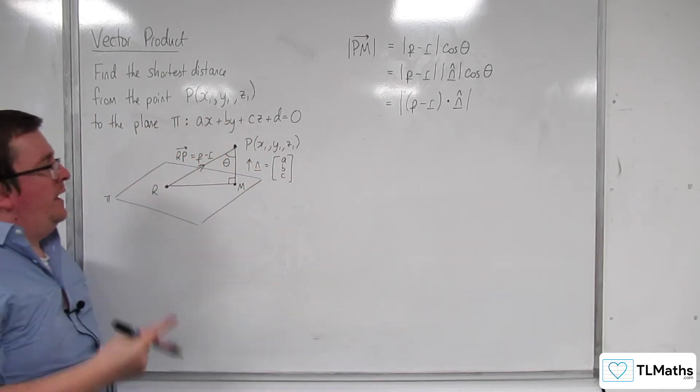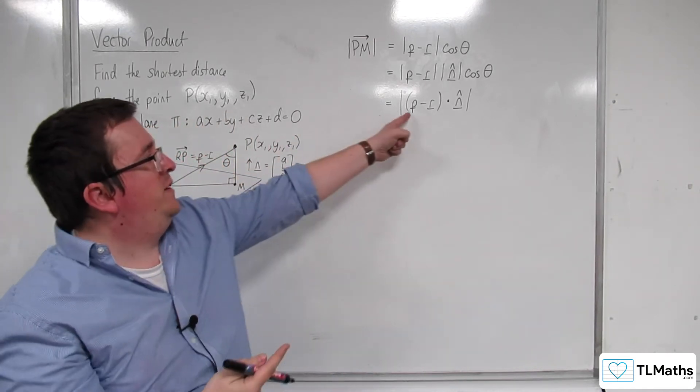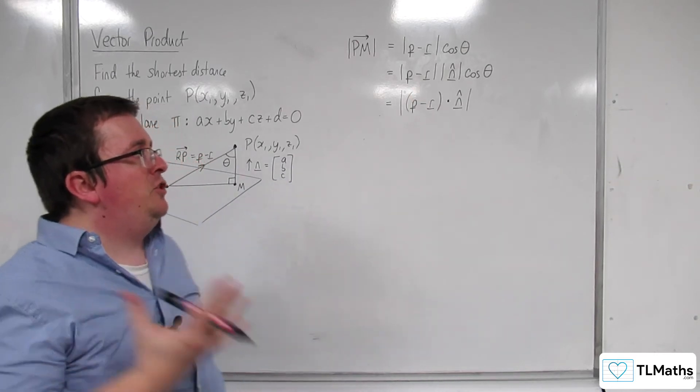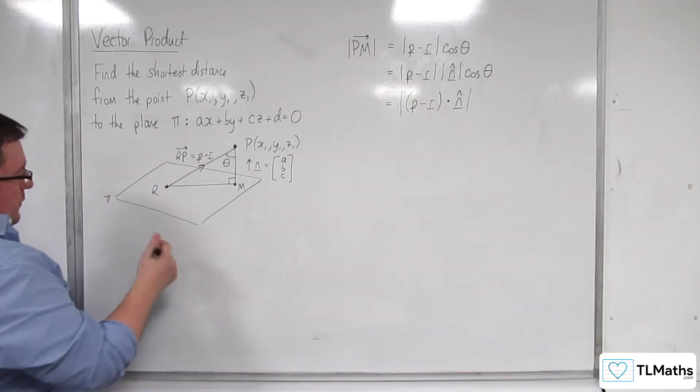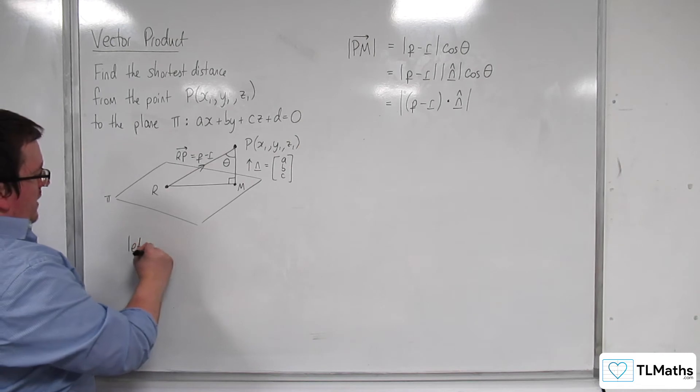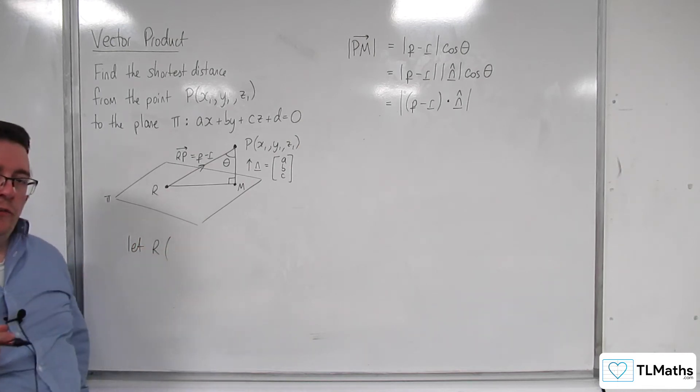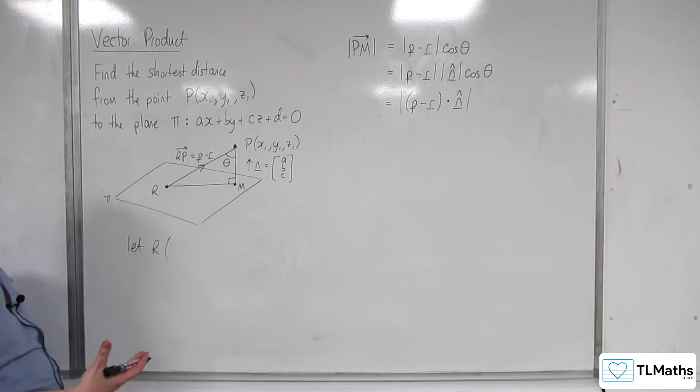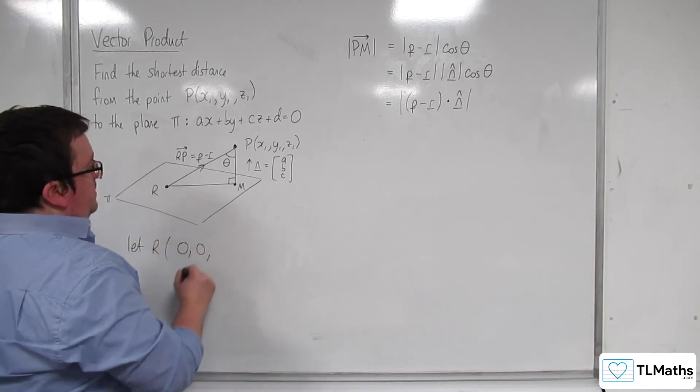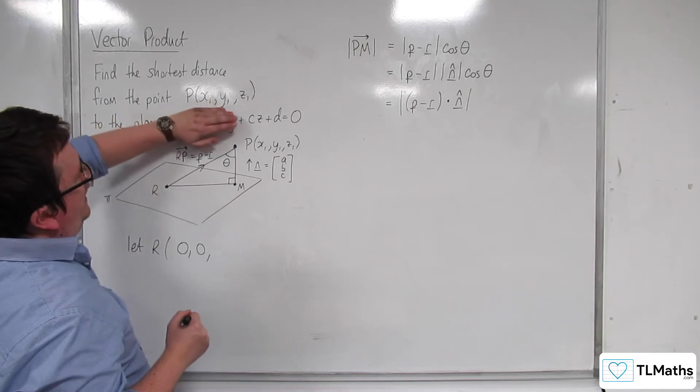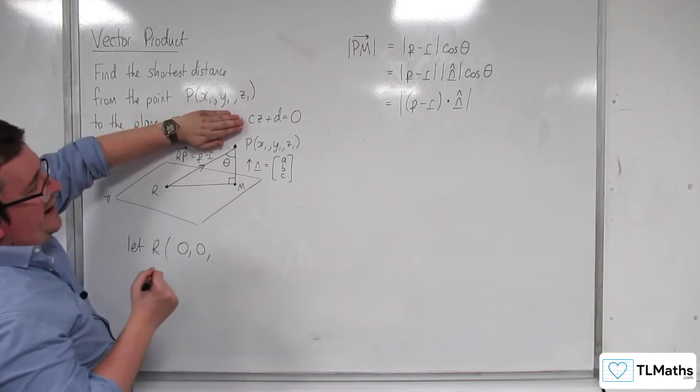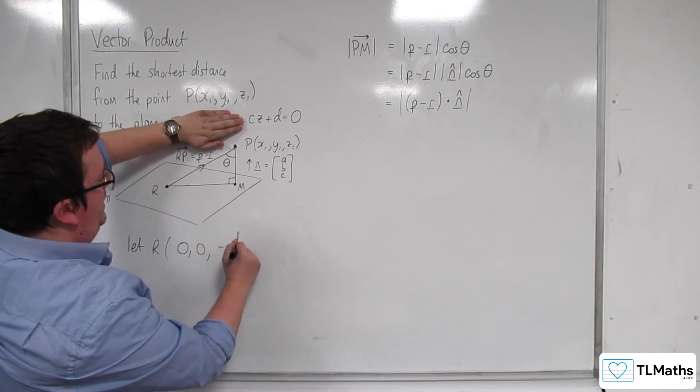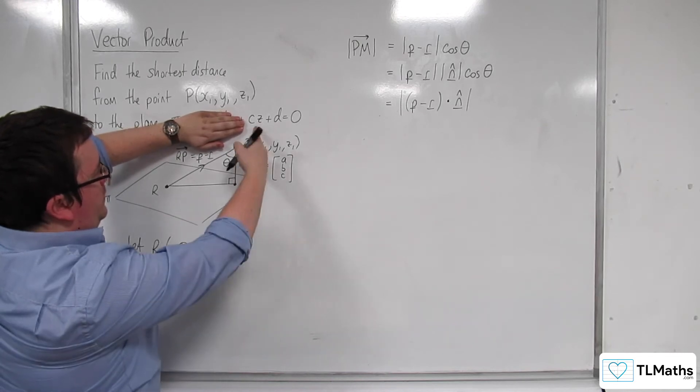Right, so the next thing is we've got P, we've got the position vector for P, but we don't have a position vector for R. So we're going to let R have some coordinates. We just need to choose some coordinates that are nice to work with, that are on the plane. So I can choose X and Y to be 0. And what that will do is it will mean that Z must be minus D over C, by rearranging that.